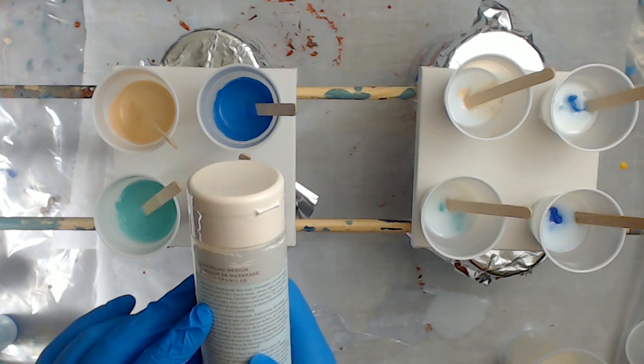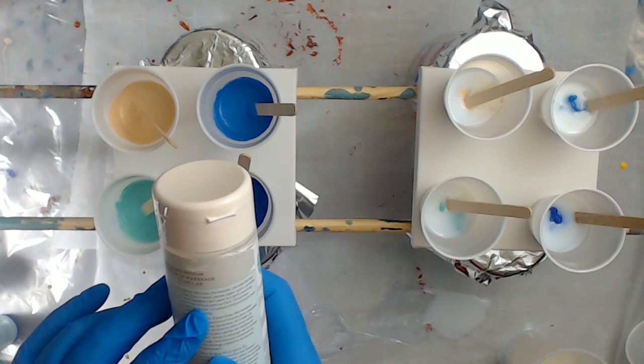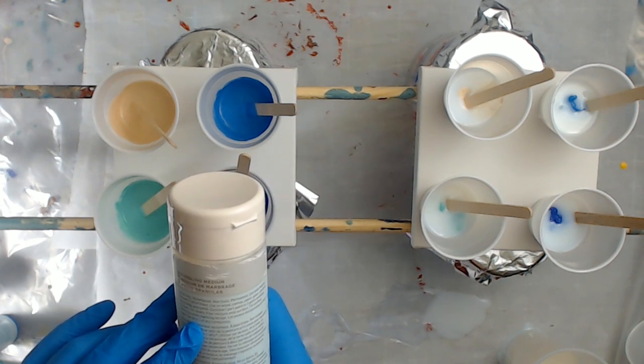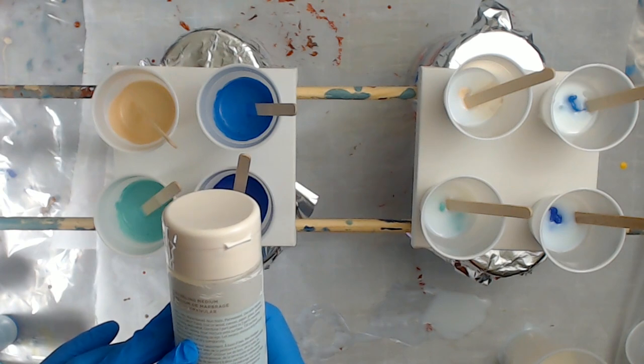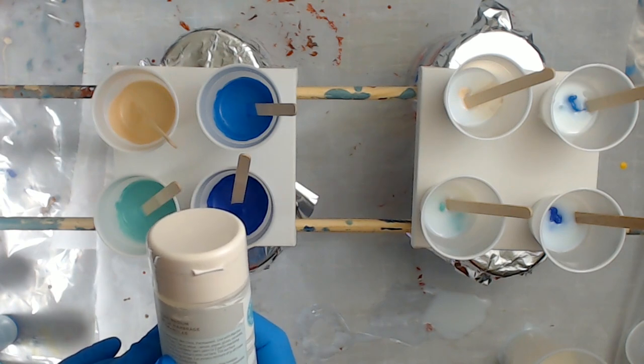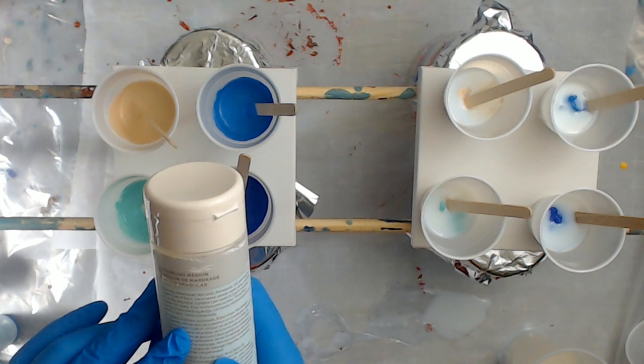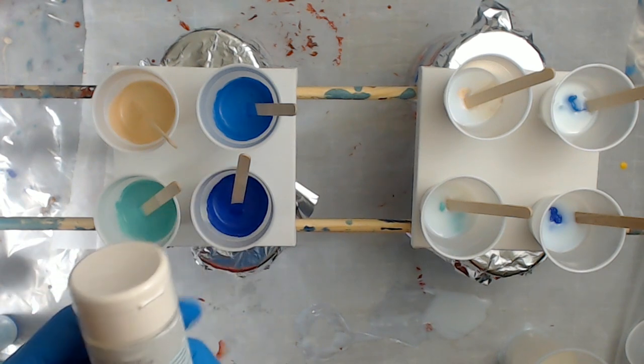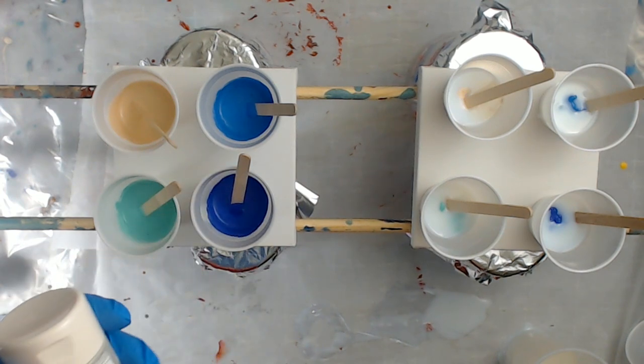It says pour mixture onto surface, tilt surface slowly to create marbling design, let excess mixture drip off from edge of project, let dry completely. Doesn't say if it dries clear, so we'll have to see how it turns out.